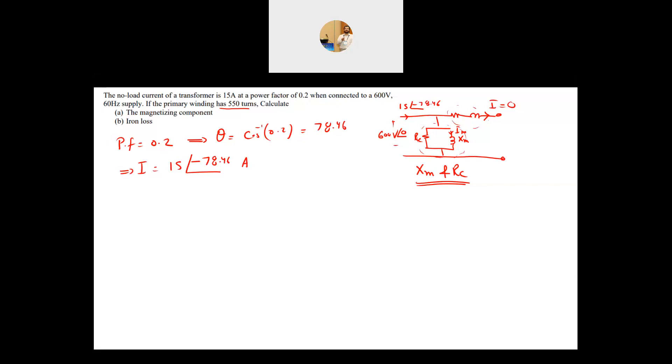I know the voltage and I know the current, and this is basically a parallel branch. When you have a parallel branch, it's better to find the admittance Y, not the impedance. Because in the admittance, you will have the two components added to each other.